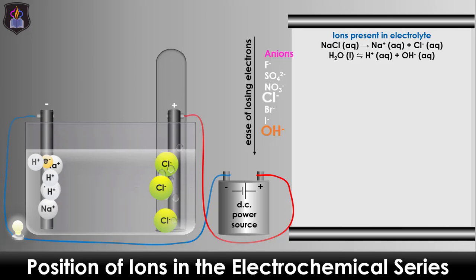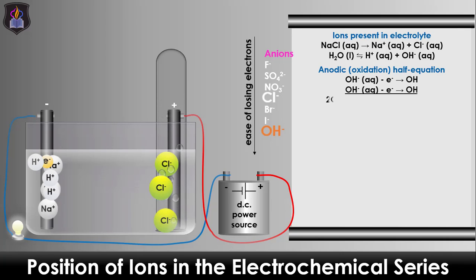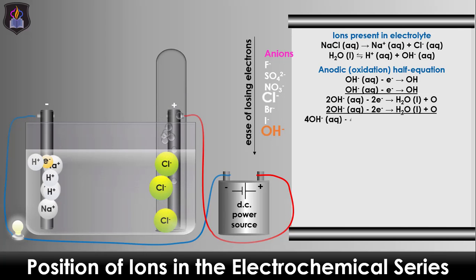Since OH cannot exist on its own, four moles of OH will combine to form two moles of water and one molecule of oxygen gas, as seen in the anodic half equation. At the cathode, the sodium and hydrogen ions compete for discharge.